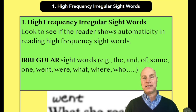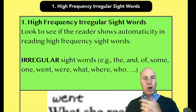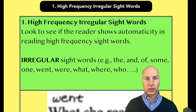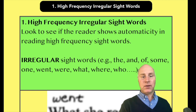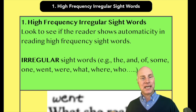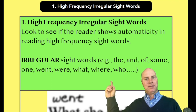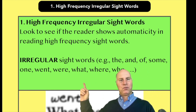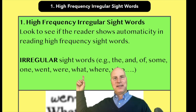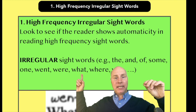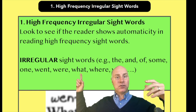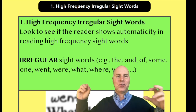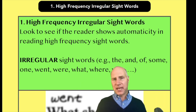How about the word 'what'? Part of 'what' is actually regular — the W-H is a consonant digraph that makes the W sound, and the T is regular. But that vowel in the middle is not long A, not short A — it's not 'wait,' it's 'what.' There's an irregular vowel sound there that you couldn't teach with a phonics rule. That's what makes these high-frequency irregular sight words.